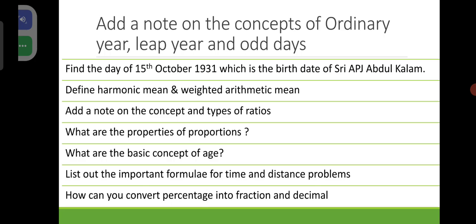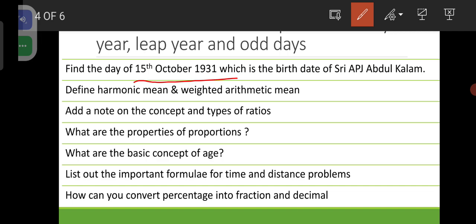Find the day of 15th October 1931, which is the birth date of Sri A.P.J. Abdul Kalam. Define harmonic mean and weighted arithmetic mean.